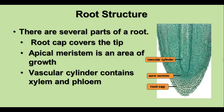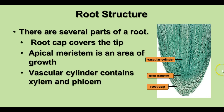Looking at root structure, roots have several different parts. There's a root cap that protects the tip — it has thicker cells that support the tip as it pushes through the soil. The apical meristem is the region of active growth right behind the cap. And the vascular cylinder contains the xylem and phloem tissues. When we looked at cells with the onion dividing, this is the part we were looking at in the apical meristem.